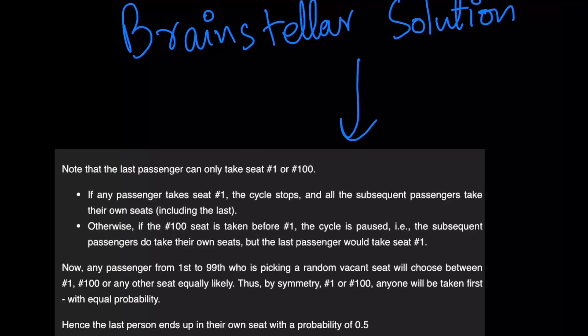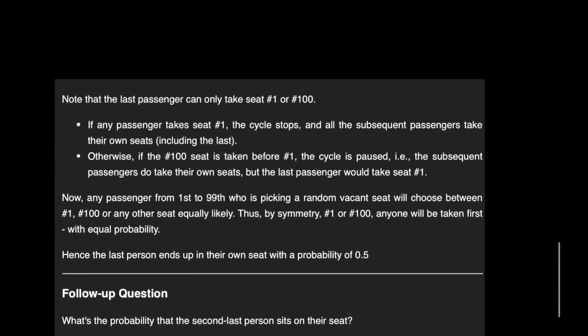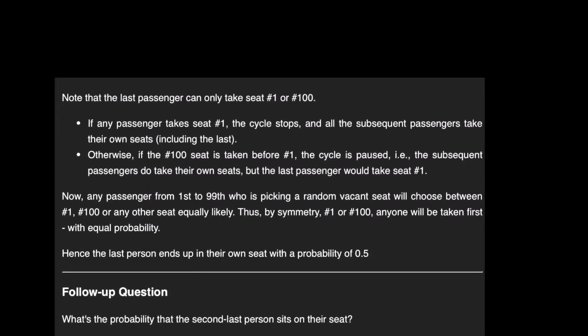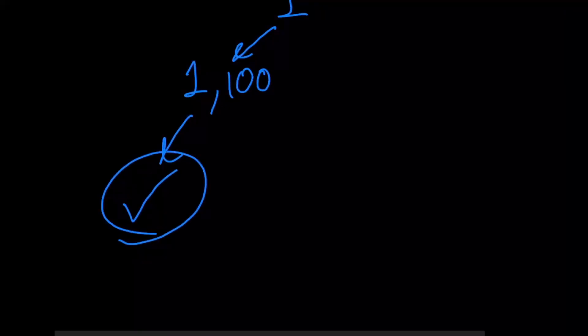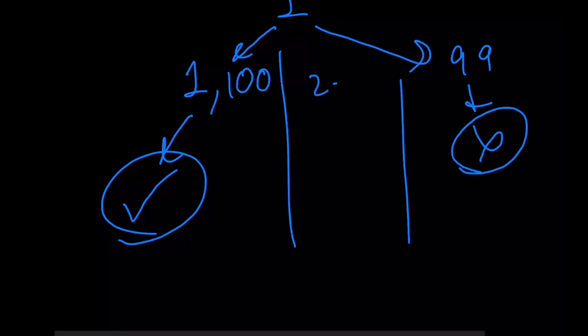I'll also be talking about the follow-up question. It basically asks for the probability of the second-to-last person — person 99 — getting their own seat. Try to think of it in the exact same manner, as a loop. If person number one chooses seat 1 or seat 100, this would automatically mean success. If person number one chooses seat 99, this automatically means we won't succeed. And for every case in between from 2 to 98, the process just keeps on continuing.